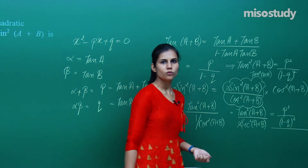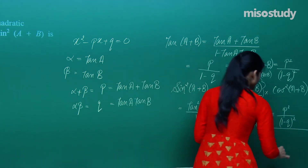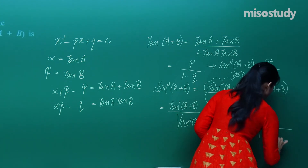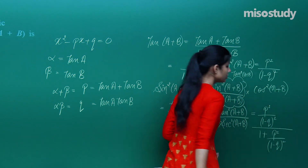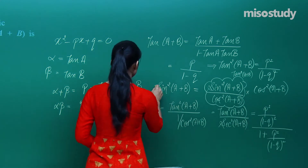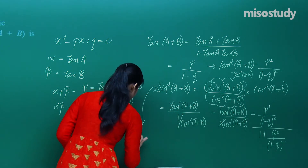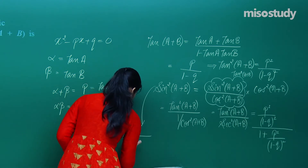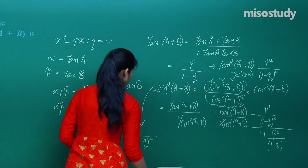So sin²(a+b) = [p²/(1-q)²] / [1 + p²/(1-q)²], which simplifies to p² / [p² + (1-q)²]. Therefore, sin²(a+b) = p² / [p² + (1-q)²].